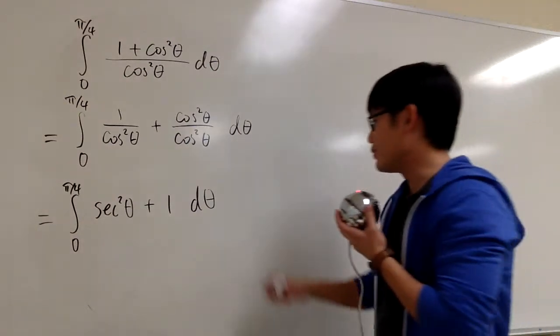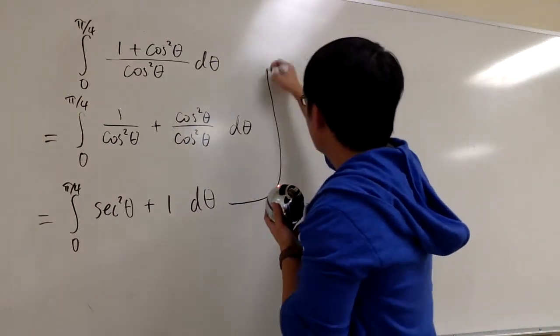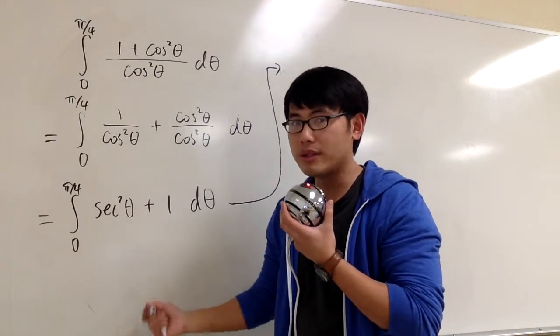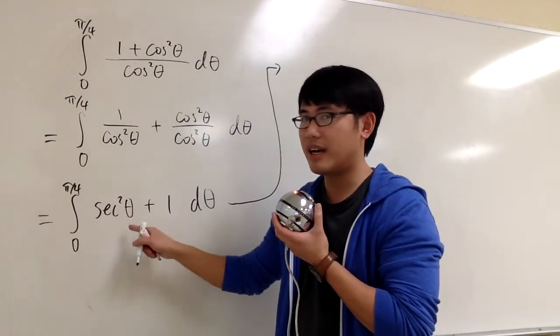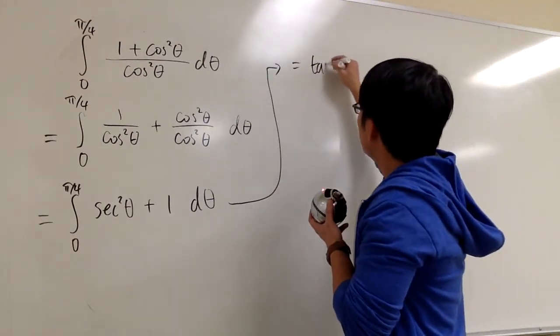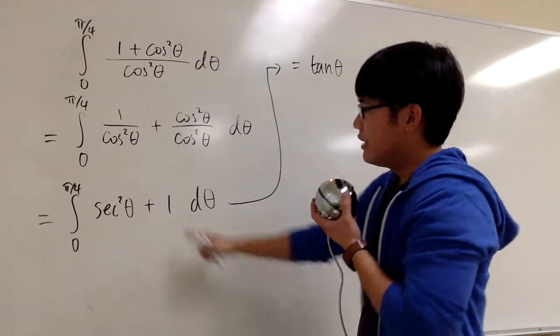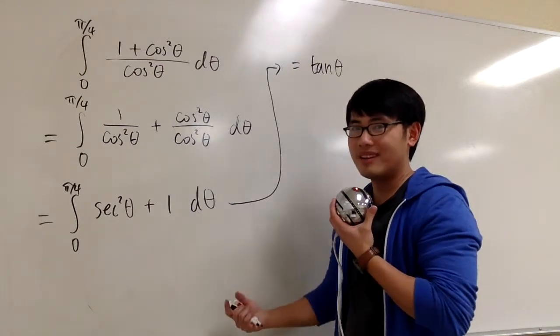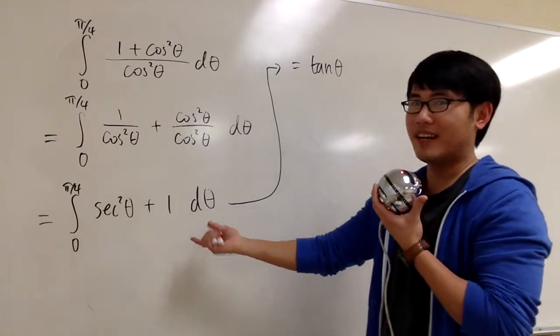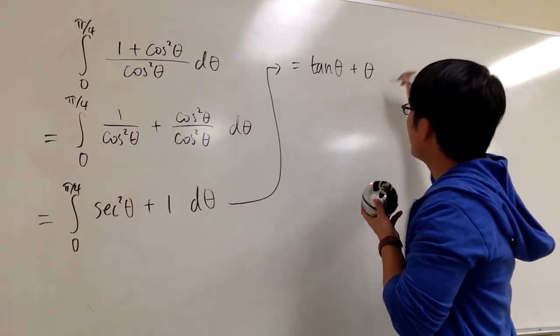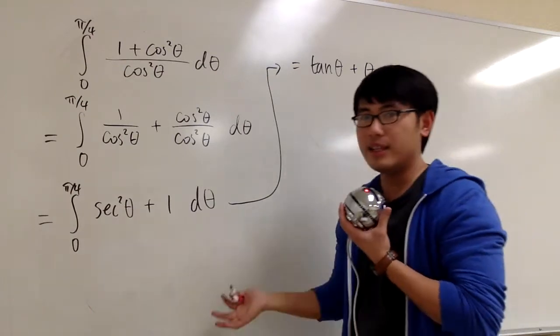And now what can we do? We can do the antiderivative now, because you can just ask yourself, derivative of what will give you secant squared theta? And the answer for that will be tangent. So this will be tangent theta. How about plus 1? In the theta world, derivative of what would be 1? The answer for that would be just theta. So we have tangent theta plus theta. That's it. That's the antiderivative.